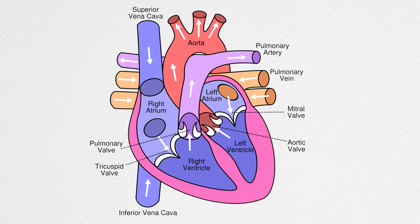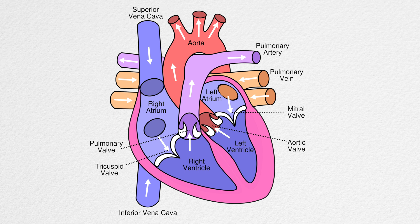Let's say I had a cardiology exam coming up and I wanted to understand how blood flows through the heart. I would think to myself: oxygenated blood enters the inferior and superior vena cava and goes to the right atrium, then through the tricuspid valve, then the right ventricle, then the pulmonary artery which takes it to the lungs. The lungs bring it back as oxygenated blood through the pulmonary vein to the left atrium, through the mitral valve, through the left ventricle, through the aortic valve, and then to the aorta which sends it through the rest of the body.